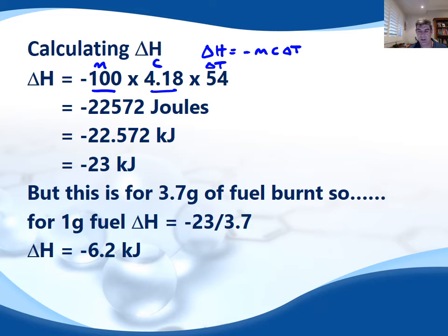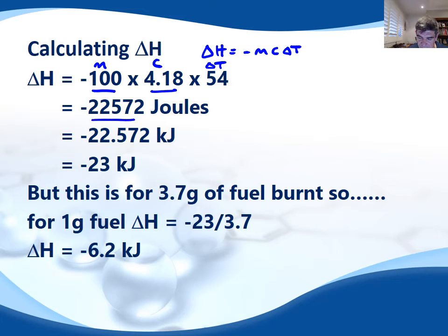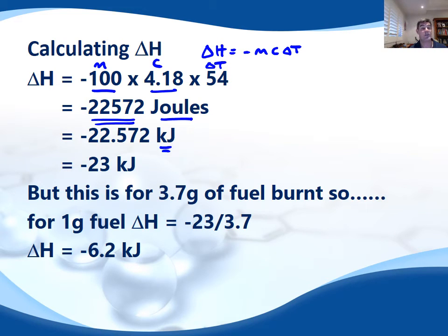4.18 keeps it in grams, and the delta T is the change in temperature in degrees or Kelvin. Notice this is a very big value because it's in joules — that's why we very often change it into kilojoules. 22,572 is a big number, but 22.572 kilojoules is a little more manageable.